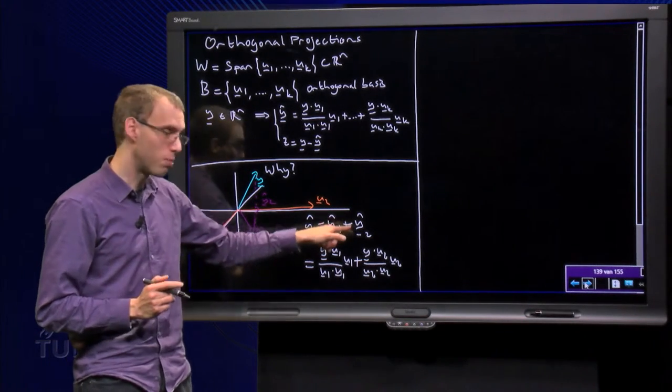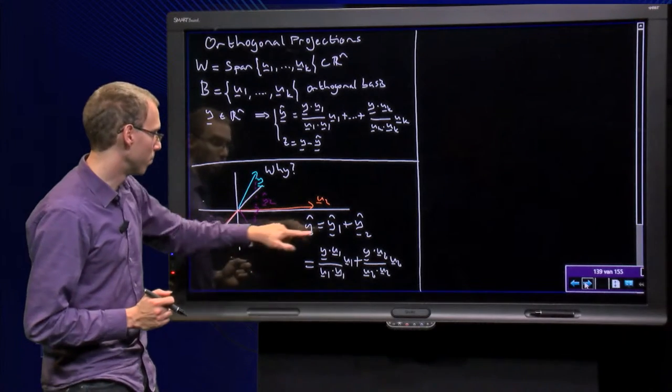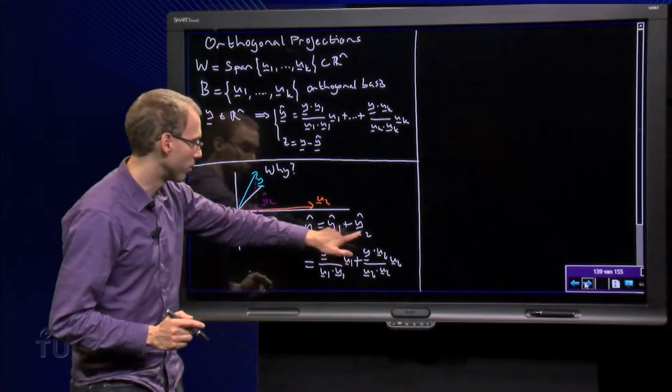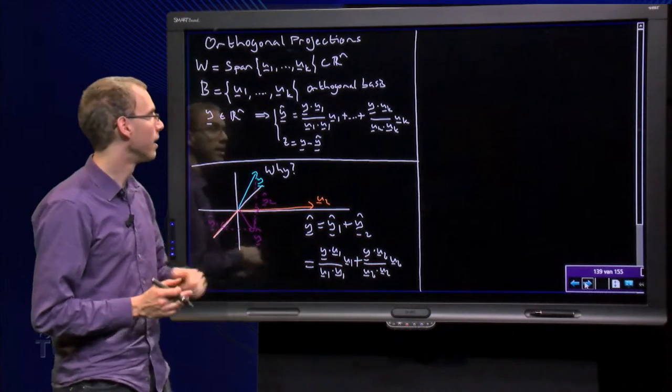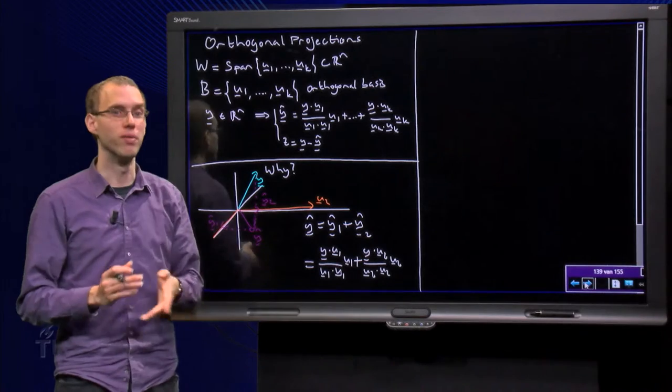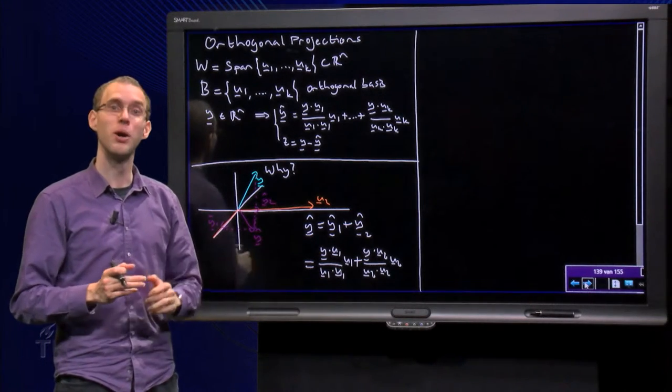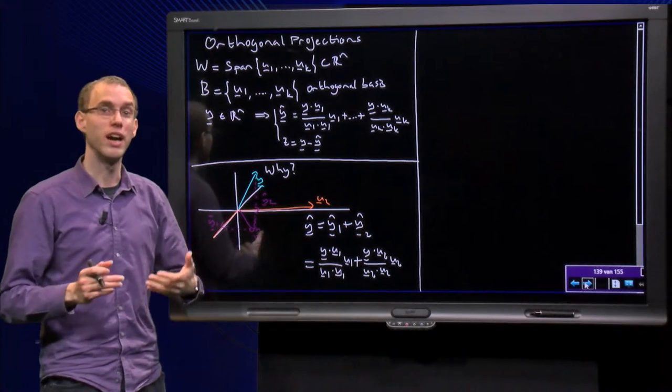y-hat equals y-hat 1 plus y-hat 2, the projection on the line through u1 plus the projection on the line through u2. And that's just the formula over here, it's only two terms. So that's the geometrical idea, let's look at it more algebraically.